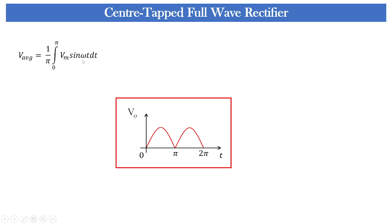So 1 by pi is 0 to pi Vm sin omega t dt and taking this Vm outside I am integrating sin omega t dt with respect to t under interval 0 to pi and integration of sin becomes minus cos of omega t. The upper limit and lower limit are there. So please apply the upper limit value and lower limit value. Take this minus sign outside and the resultant would be 2 Vm by pi or it is 0.637 Vm. So this is the average value of the output of the full wave rectifier.